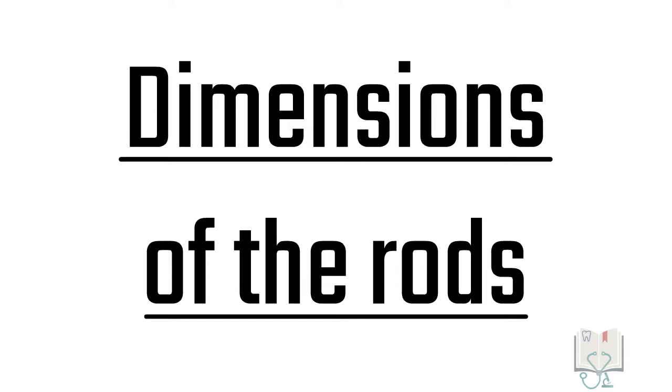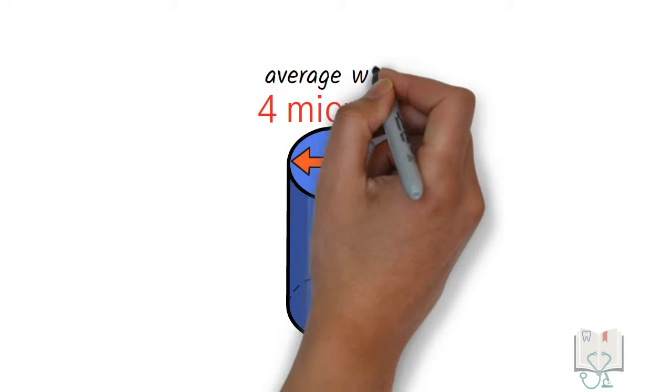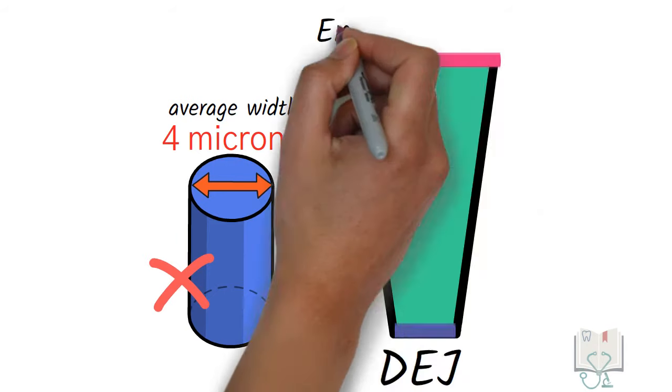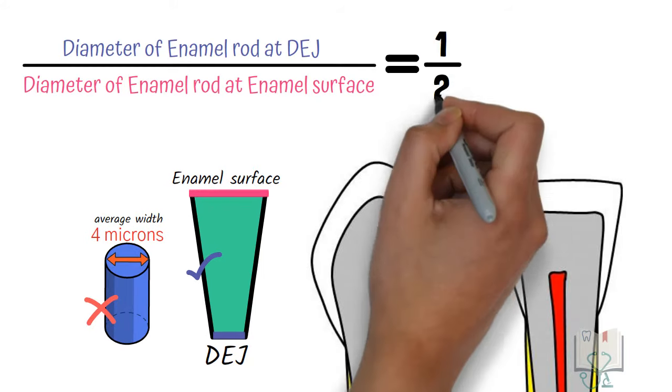Now let us see the dimensions of the enamel rods. The average diameter of enamel rod is 4 microns. But this is only the average as the diameter of enamel rods changes from one end to another. They are thinner at the dentino enamel junction and thicker at the enamel surface. The ratio of these two diameters is almost 1 is to 2.